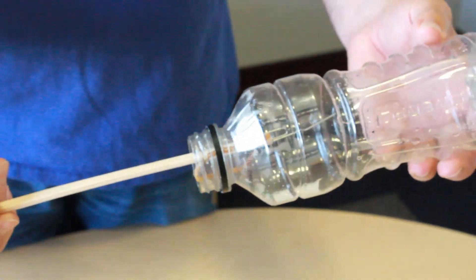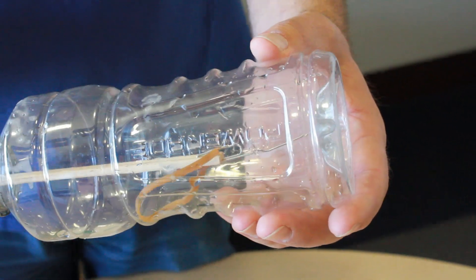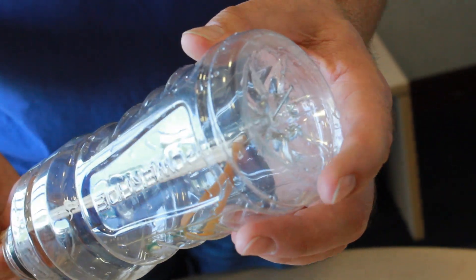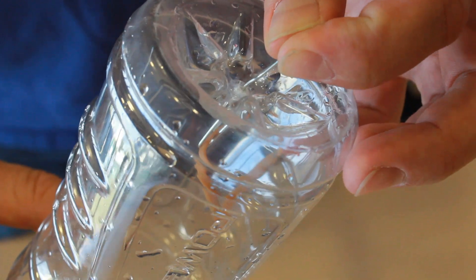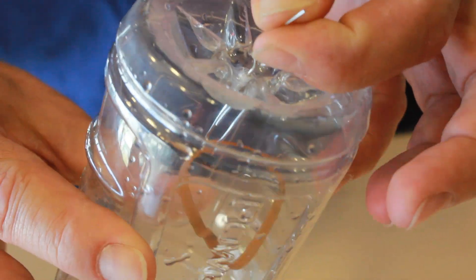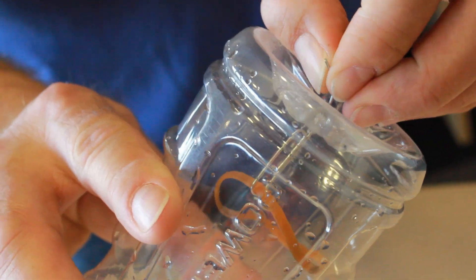Then insert the paper clip up into the bottle and through the hole in the bottom of the bottle. Once you get the paper clip through, take the chopsticks out. Now just bend the end of the paper clip so that it won't go back through the bottle.